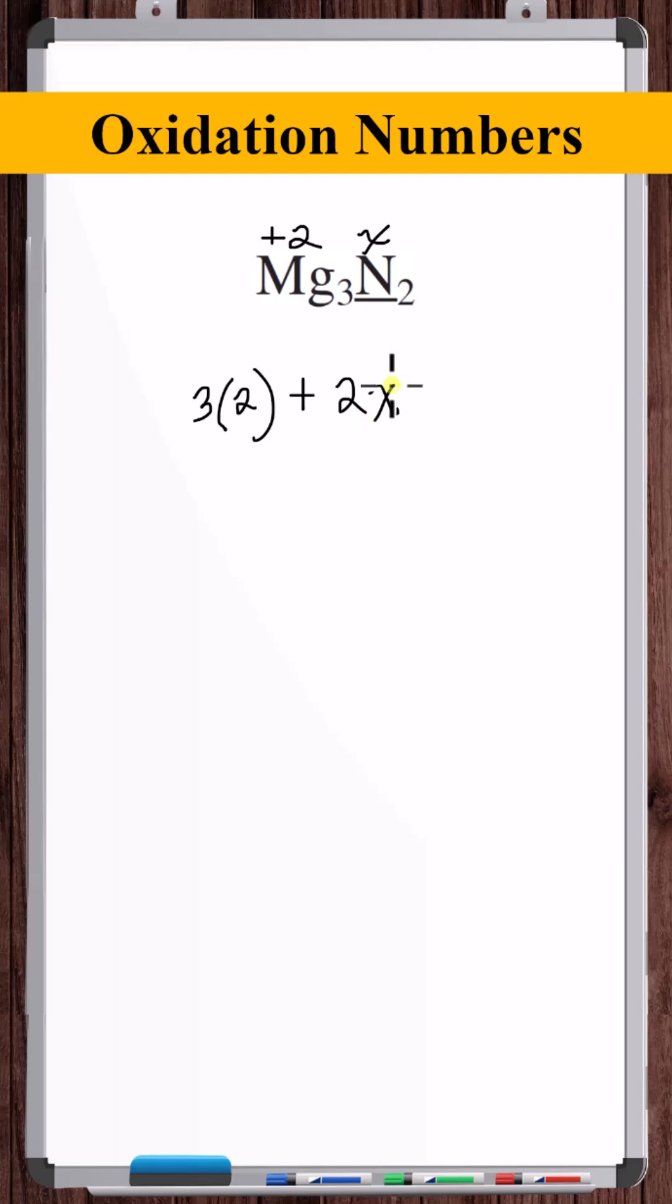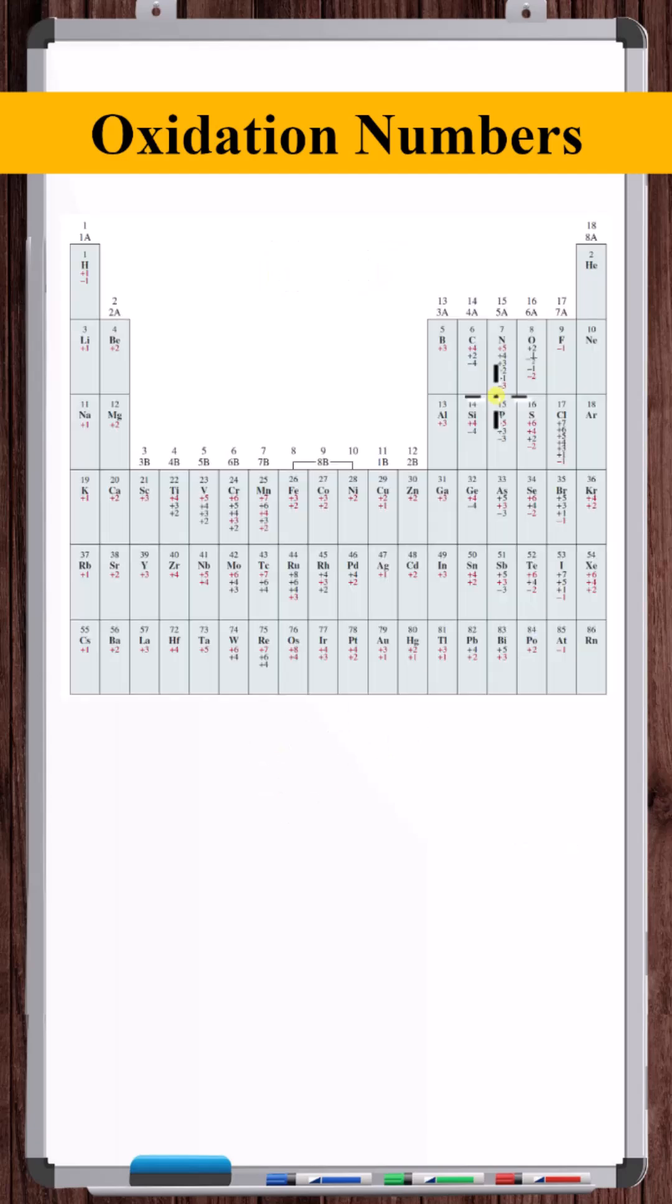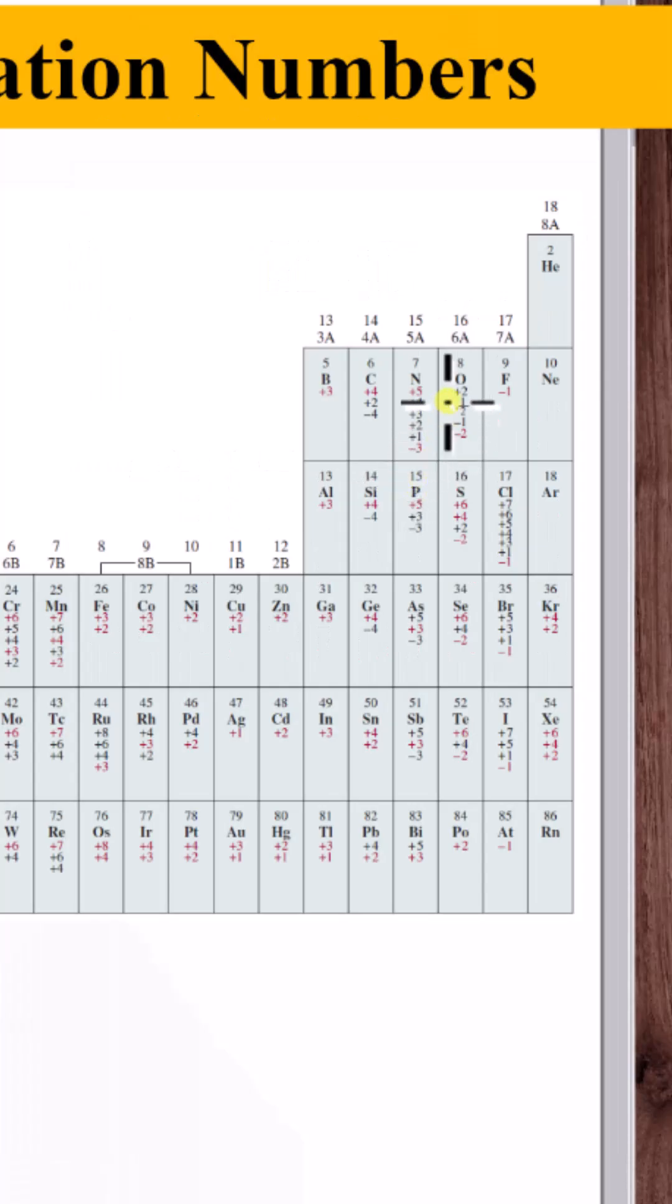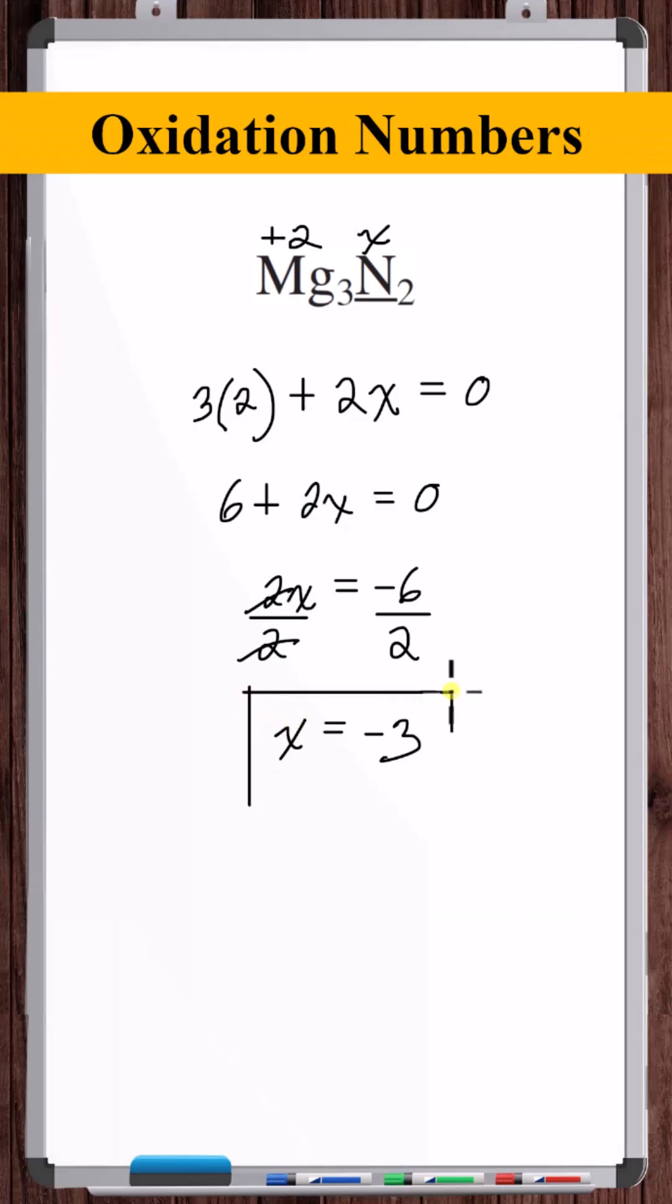Now solve for x. Minus three is a listed oxidation number for nitrogen and it's in red, so it's also a common oxidation number. So the oxidation number on each nitrogen atom is -3.